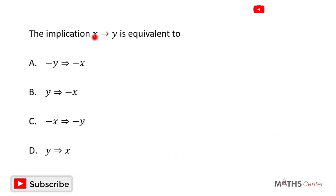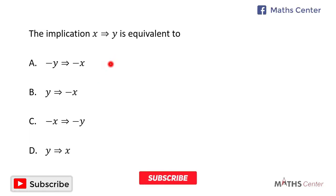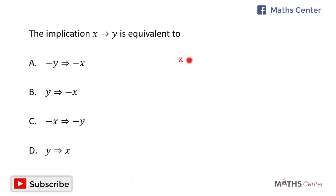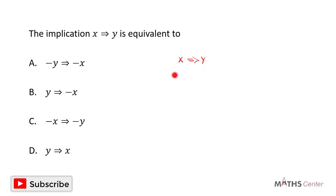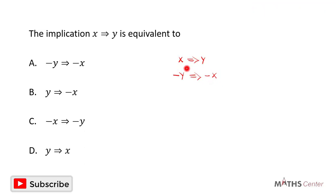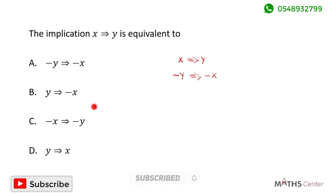The implication X implies Y is equivalent to its contrapositive. This is a multiple choice question, so you solve the question and after that you pick the correct option. The statement given is X implies Y. If X implies Y, then the equivalent statement will be negative Y implies negative X. When we look through the options we can see that the correct option is A.